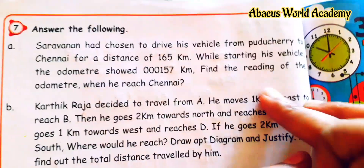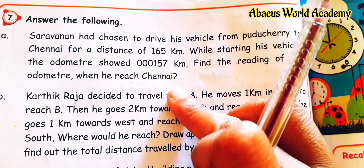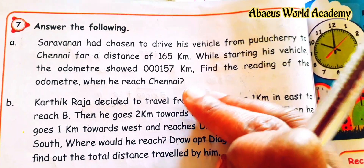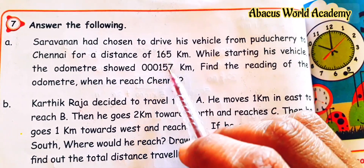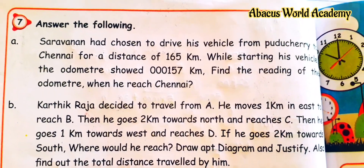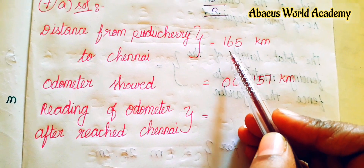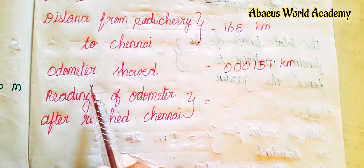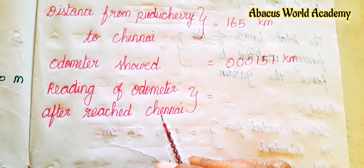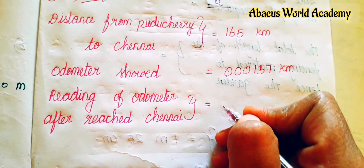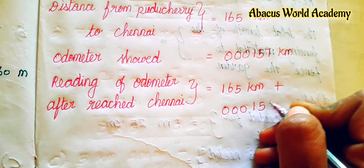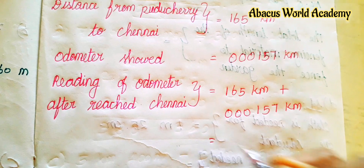The odometer reads 000157 km. So find the reading of the odometer when he reached Chennai. If you start the vehicle from Puducherry, it is 165 km plus 000157 km. So add and answer.